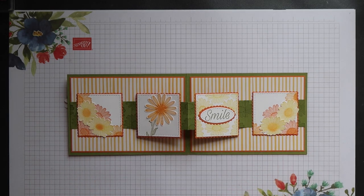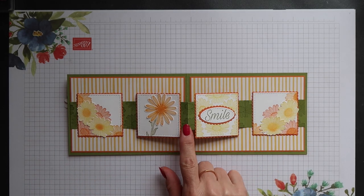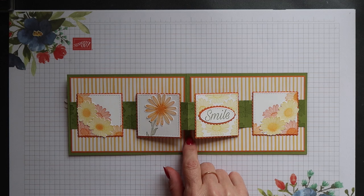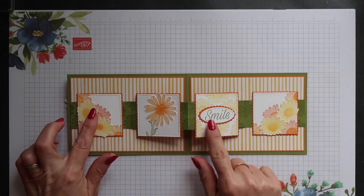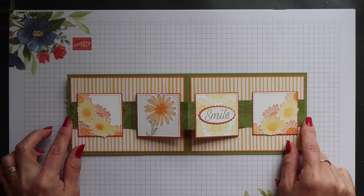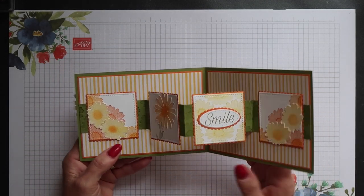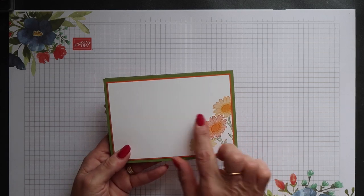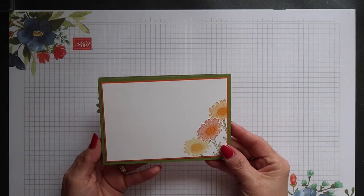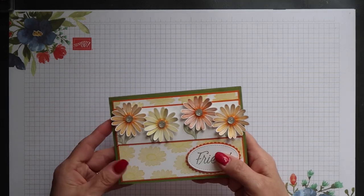I've chosen to keep these middle two panels raised even when the card is fully open. This stops that middle score line inverting and getting stuck in that position, making it difficult to open and close your card. On the reverse, you have a panel to write your message. So let's get started.